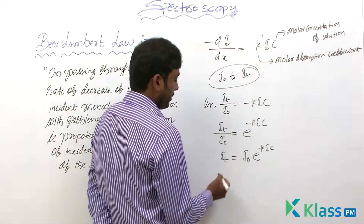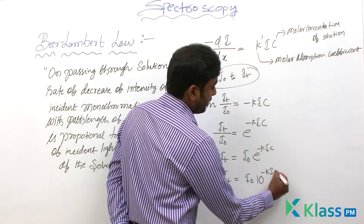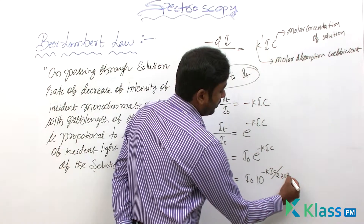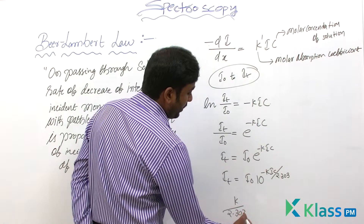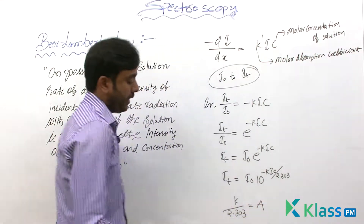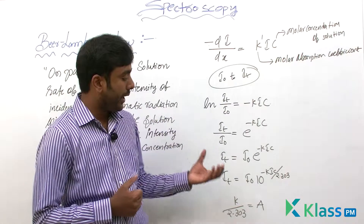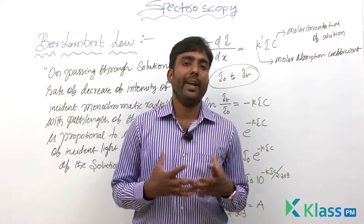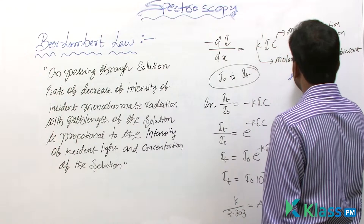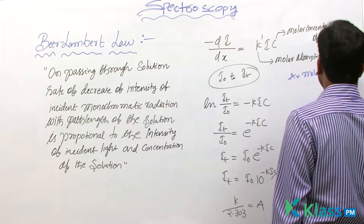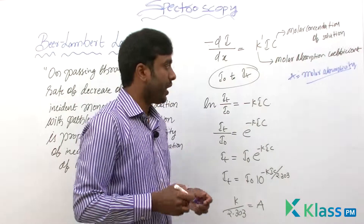We will convert this into log base 10: IT = I0 × 10^(−KlC / 2.303). Here, K / 2.303 we will take as A — or more precisely as ε (epsilon). This A (or ε) is the molar absorptivity, also called the molar extinction coefficient. It is represented as epsilon — molar extinction coefficient or molar absorptivity.